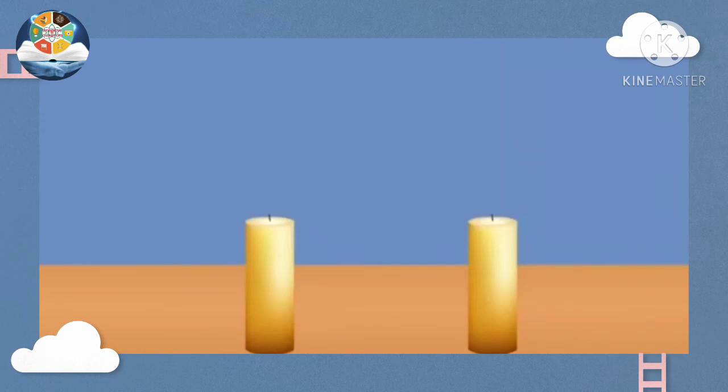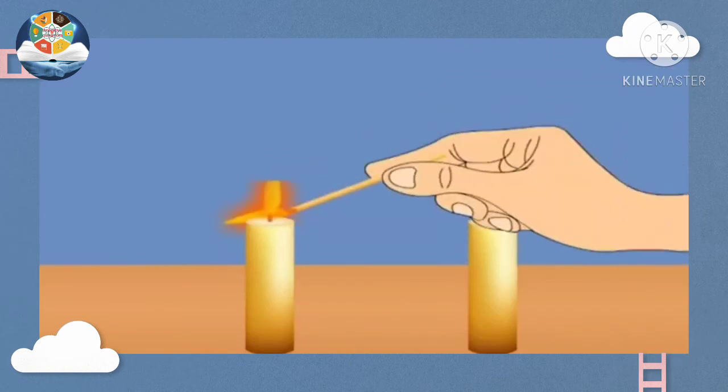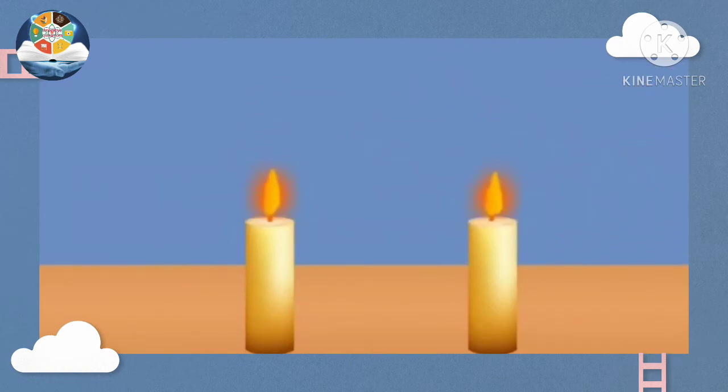We need air for burning a candle. Take two candles, fix them on a table. Ask an elder to light both the candles. Now, cover one of the candles with the glass.